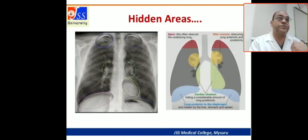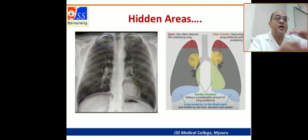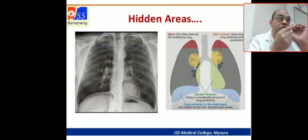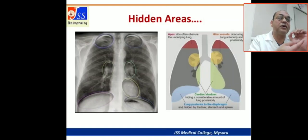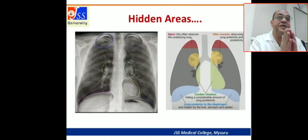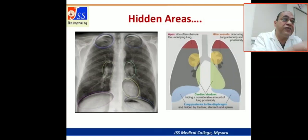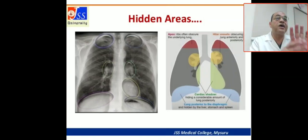The third area is the retrocardiac shadow. The cardiac shadow can hide a considerable amount of the posterior lung, so you have to emphasize this area and comment about it clearly. The fourth area is the lung posterior to the diaphragm — there is an area of lung under the diaphragm that will be hidden by the liver, stomach, and spleen, so you have to comment about it.